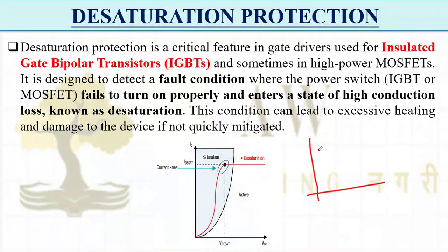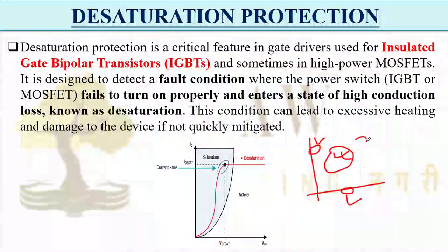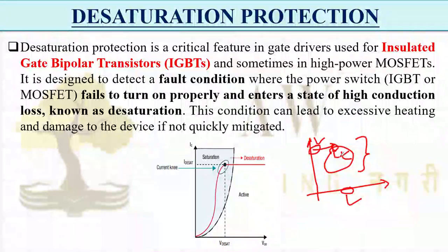One key concept: power electronic devices mostly operate either in the saturation region (on state) or the cutoff region (off state). In the on state, voltage drop is near zero; in the off state, current is zero — so power loss is very low. But if the device operates somewhere in between, both voltage and current are finite, causing high losses. Since the switch operates at very high switching frequency, we want to avoid these losses.